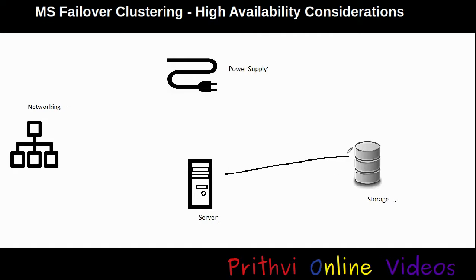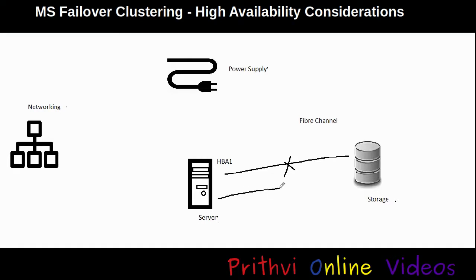We have connectivity with the storage through fiber channel, and this connectivity is facilitated through an HBA card installed in our server. This is a single point of failure — any loss in the storage network connectivity or any fault on the HBA card will bring our storage into a disconnected mode and we will lose access to our data, bringing the entire application down.